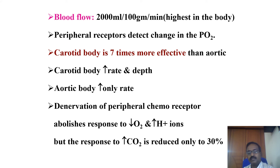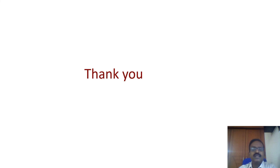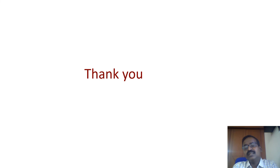Denervation of the peripheral chemoreceptors abolishes the response to hypoxia, decreased oxygen levels, and acidosis with increased hydrogen ions, but the response to carbon dioxide is reduced by only 30 percent. Normally, peripheral chemoreceptors respond to hypoxia but also respond to acidosis and hypercapnia.